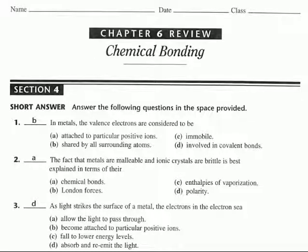Number three: as light strikes the surface of a metal, the electrons in the electron sea absorb and re-emit light. There is quite a bit of chemistry application here, but this is also a very big physics thing.